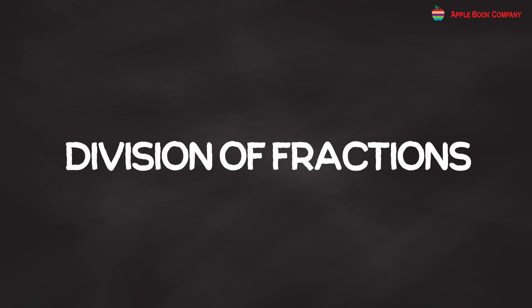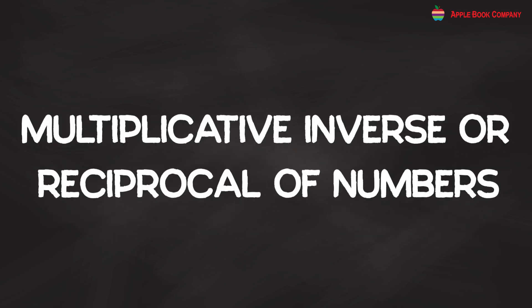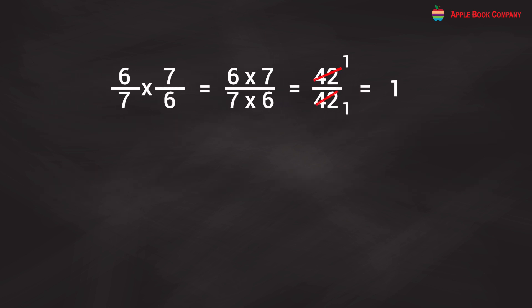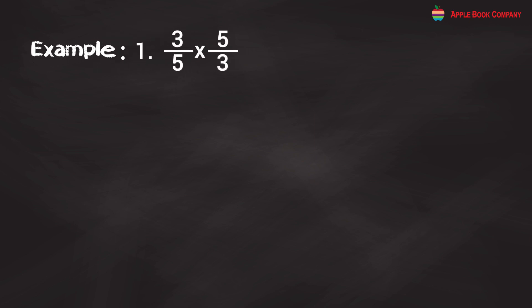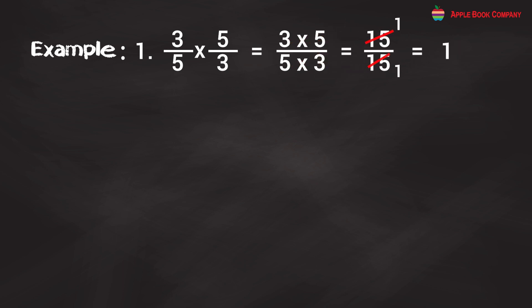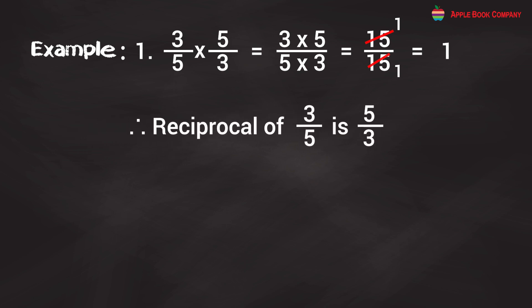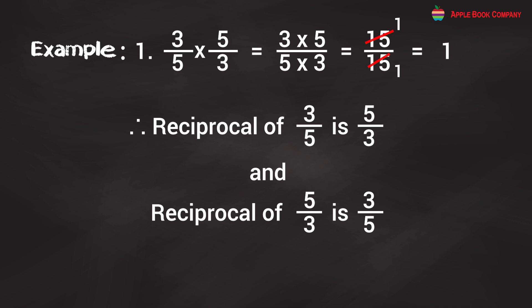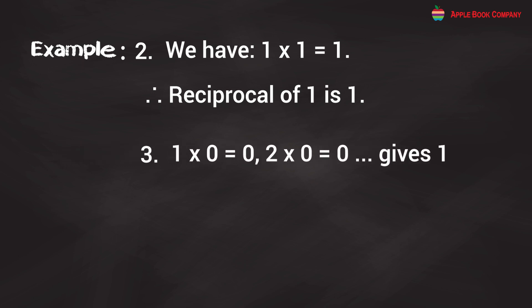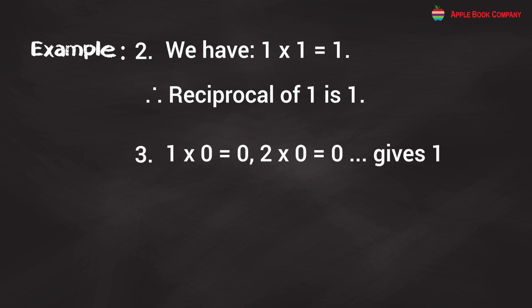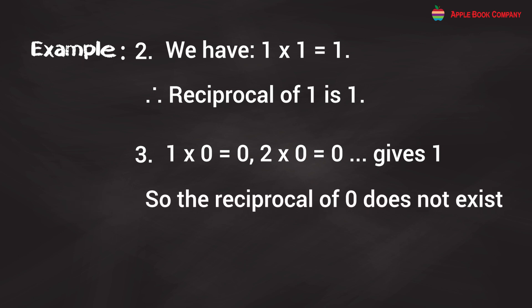Division of Fractions. Multiplicative Inverse or Reciprocal of Numbers. If two numbers have a product of 1, each is called the multiplicative inverse or reciprocal of the other. For example, 3/5 × 5/3 = 15/15 = 1, so the reciprocal of 3/5 is 5/3 and vice versa. Also, reciprocal of 1 is 1. Since no number multiplied by 0 gives 1, the reciprocal of 0 does not exist.